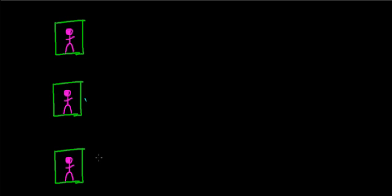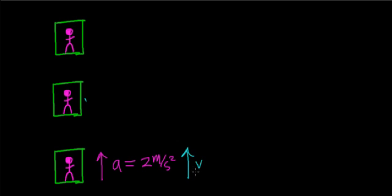For example, once you hit the up button, the elevator is going to begin to accelerate in the upward direction. Let's assume that this elevator accelerates at a rate of 2 meters per second squared, which is about the average rate an elevator accelerates at. Your velocity is going to change in the upward direction — the elevator is going to start speeding you up. By Newton's first law, the elevator has to apply a force on you in the upward direction to cause you to change your velocity.